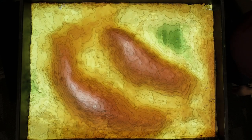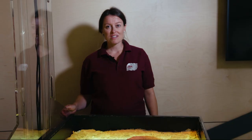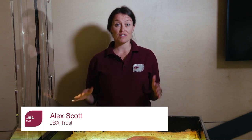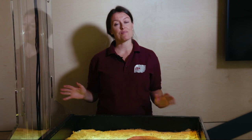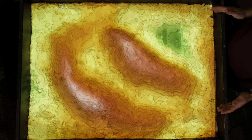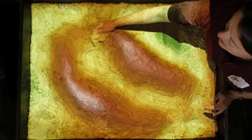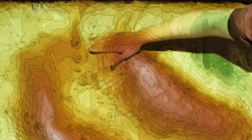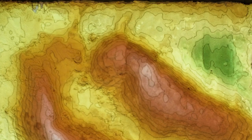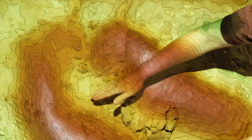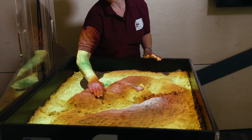This is the JBA Trust's augmented reality sandbox, so essentially it shows how water can move through a river catchment and how the landscape affects the flows of water. If we take a look at the sandbox you can see that as we move the sand the contours change in real time so we can shape our own catchments however we like.